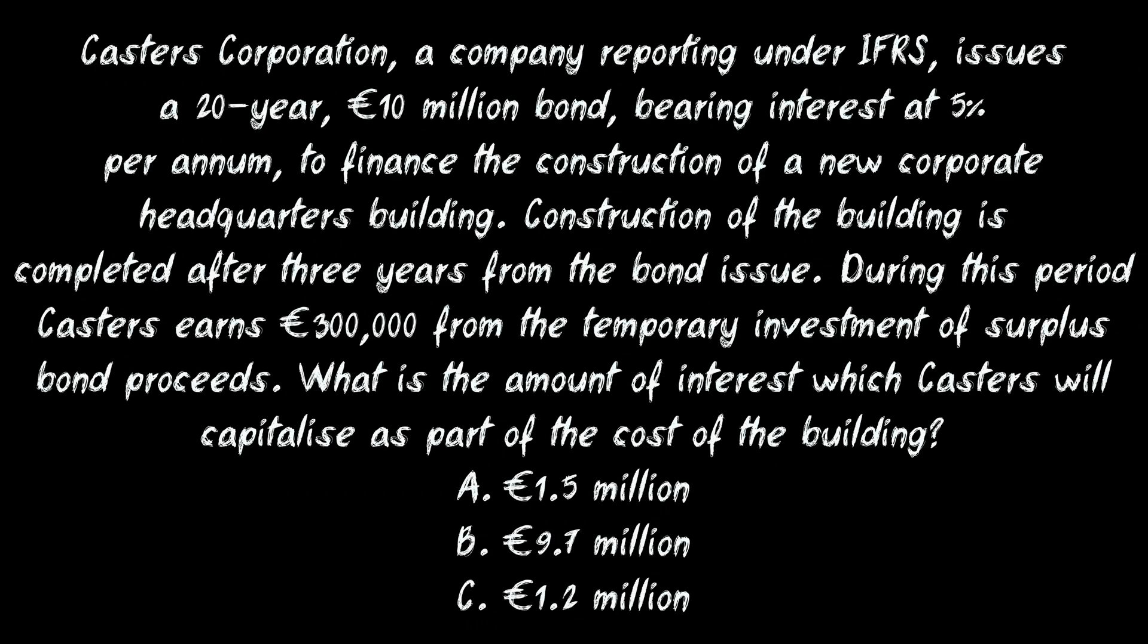So this is the question that I want you to have a go at. Castors Corporation, a company reporting under IFRS, issues a 20-year, 10 million euro bond, bearing interest at 5% per annum, to finance the construction of a new corporate headquarters building. Construction of the building is completed after three years from the bond issue. During this period, Castors earns 300,000 euro from the temporary investment of surplus bond proceeds. What is the amount of interest which Castors will capitalize as part of the cost of the building?